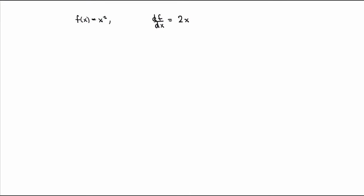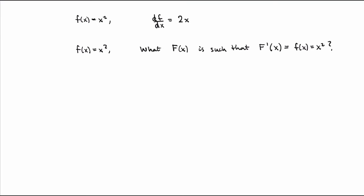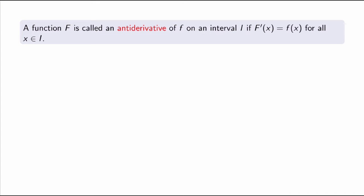But now what about the inverse process? So if I give you the same function x squared, but instead of calculating the derivative, I ask you what function F is such that its derivative gives you back x squared — so it's such that F' is equal to f, which is x squared. This inverse process has a name: it is called calculating an antiderivative of a function.